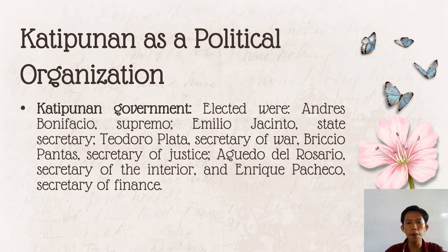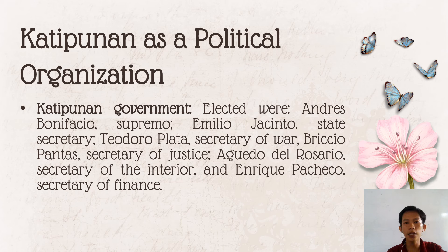The elected officers of the Katipunan government were: Andres Bonifacio as Supremo or President, Emilio Jacinto as State Secretary, Teodoro Plata as Secretary of War, Bricio Pantas as Secretary of Justice, Aguedo del Rosario as Secretary of the Interior, and Enrico Pacheco as Secretary of Finance.